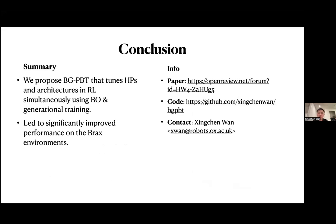In summary, we propose BGPBT, which tunes both hyperparameters and architectures simultaneously in RL environments using Bayesian optimization and generational training with distillation. The paper, code, and contact information are available. Thank you very much for your time — I'm happy to take questions.